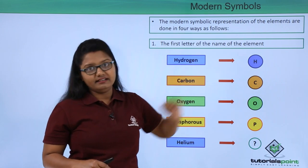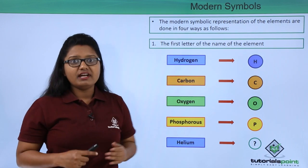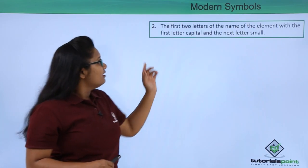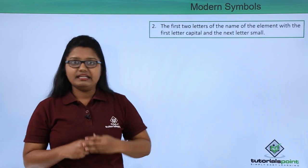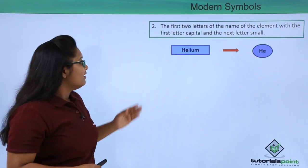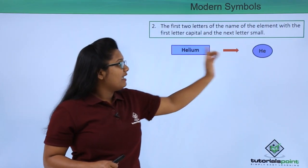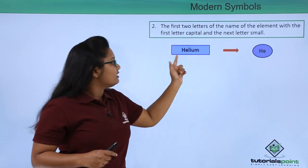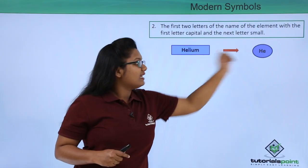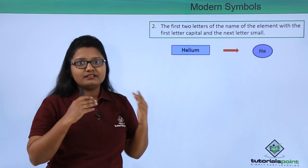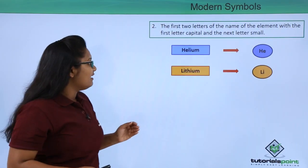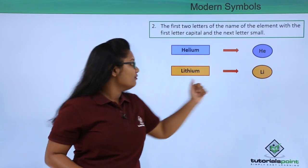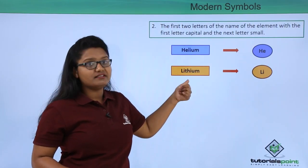To overcome this, some elements are represented by the first two letters of their names. The first letter is written in capital and the second in small. For example, helium is represented by He, and lithium is represented by Li — again the first two letters of the name.